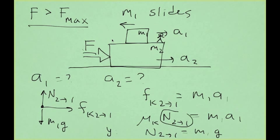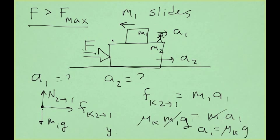So we can replace for N21, M1G, cancel M1, and obtain that the acceleration of block M1 is going to be μ sub k times g.